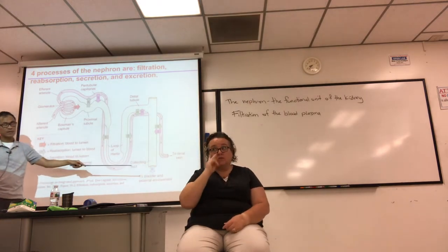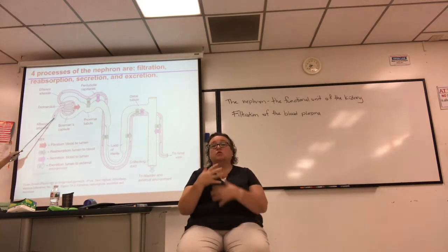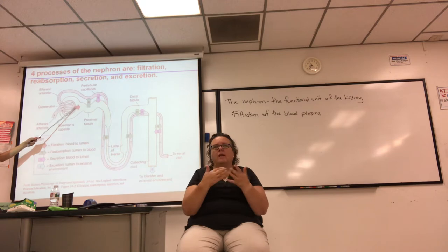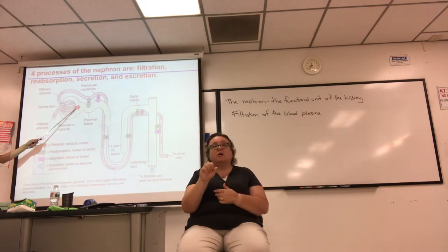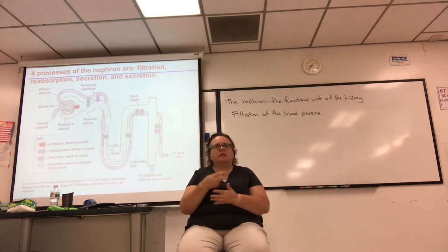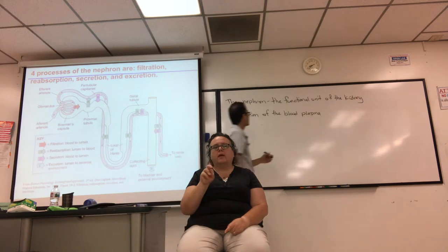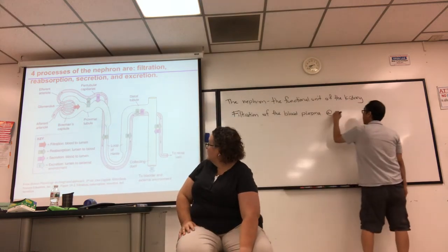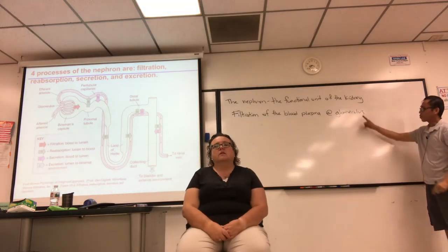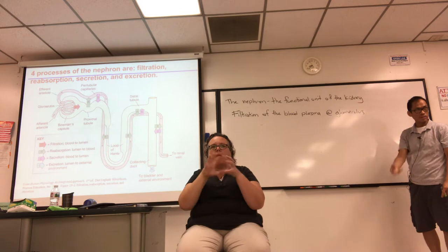Filtration happens at the glomerulus — a specialized capillary. The word 'glomer' means ball of yarn, so it's named for the appearance, the shape of the capillaries. Whatever is filtered goes through the nephron tubule, and along the way the rest of the nephron performs reabsorption and secretion.